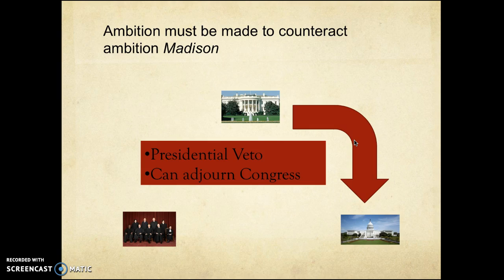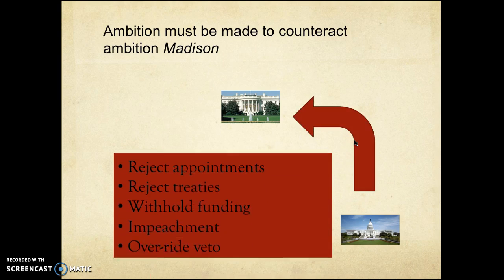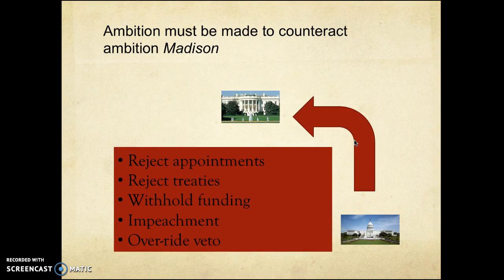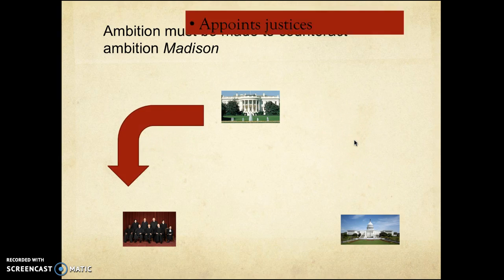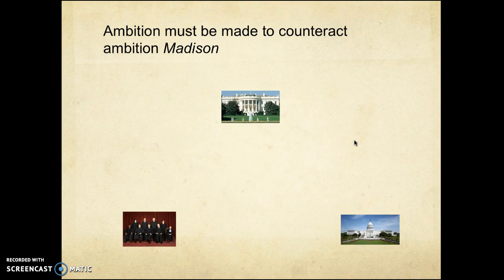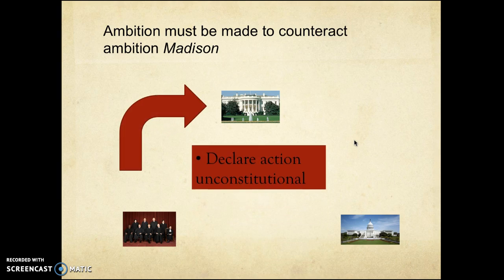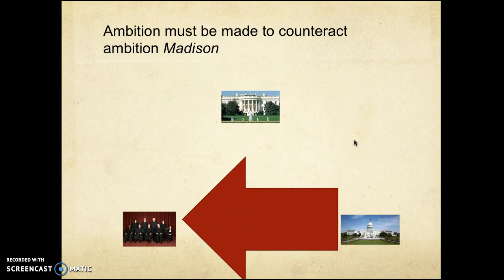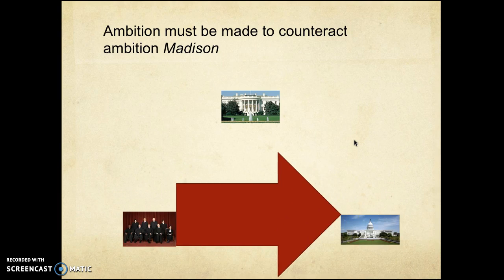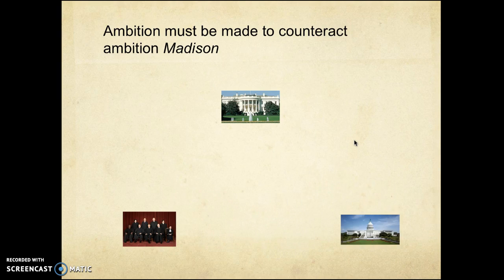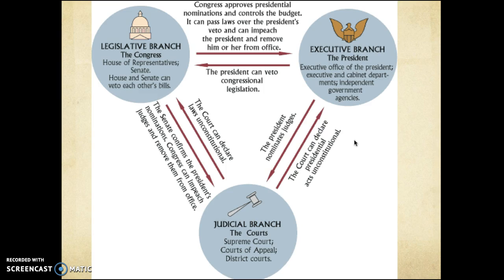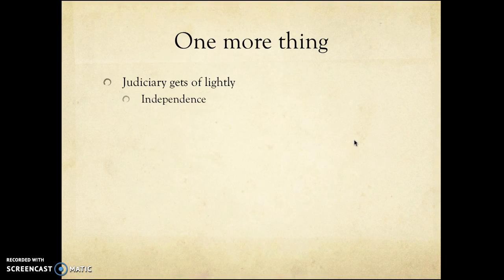Let's have another look at checks and balances — that idea of ambition being made to counter ambition. Here are our three branches: the judiciary, the executive, and the legislature. The executive can exercise veto over Congress and can under certain circumstances adjourn Congress; Congress on the other hand can reject appointments. This is the separation of powers and checks and balances as laid out on one page, which you can find on the internet or I can get a copy to you.